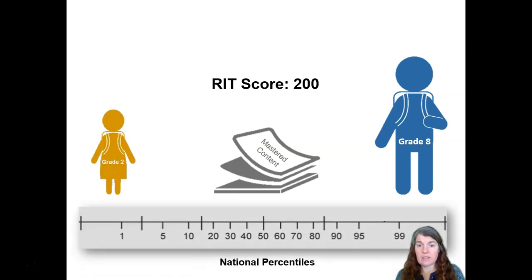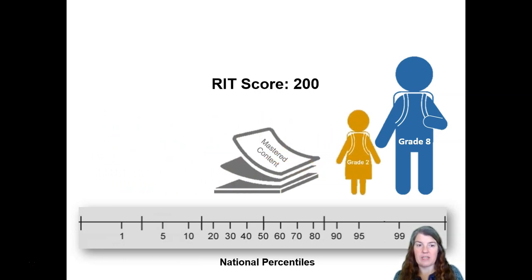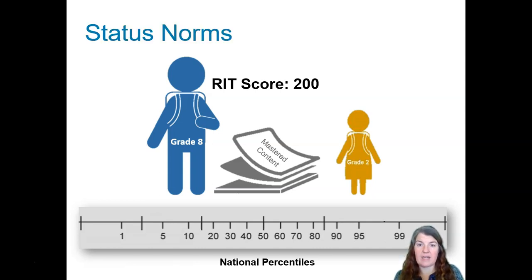MAP has national norms. If a second grader has a RIT score of 200, she may be at the 95th percentile, which means she is outperforming 95% of her peers. An eighth grader with a RIT score of 200, however, is at around the 13th percentile, meaning he is only outperforming about 13% of his peers. We know this because MAP has status norms. So in this example, we have two students who have the same RIT score with very different national percentiles.